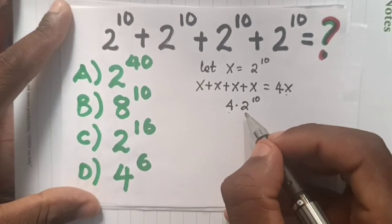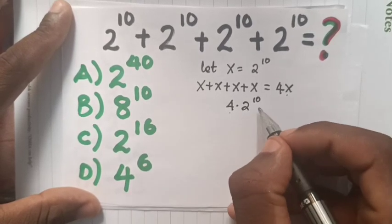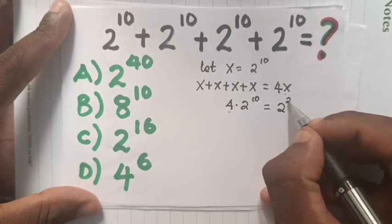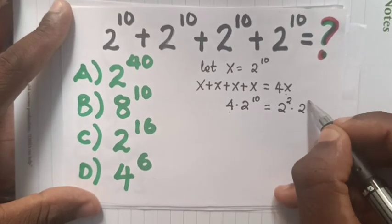4 is equal to 2 power 2, so it will be 2 power 2 times 2 power 10.